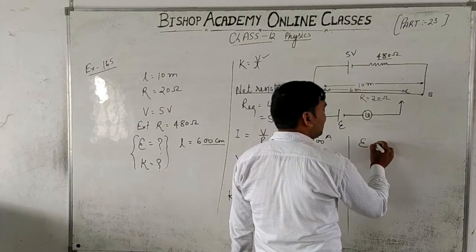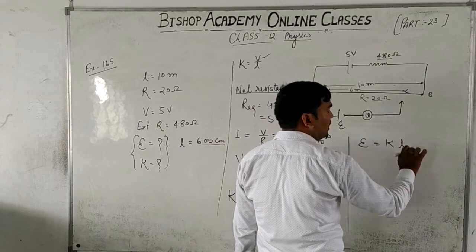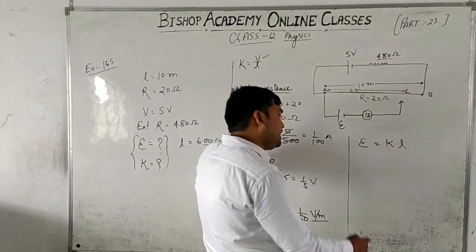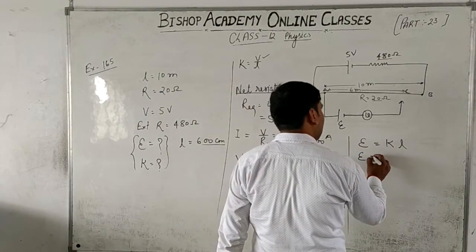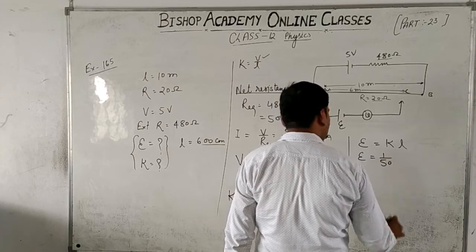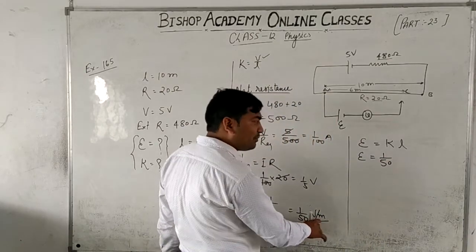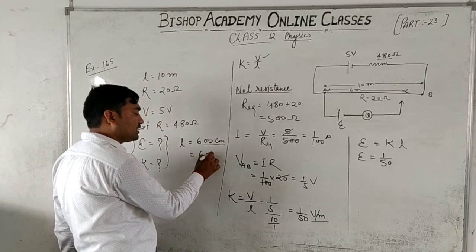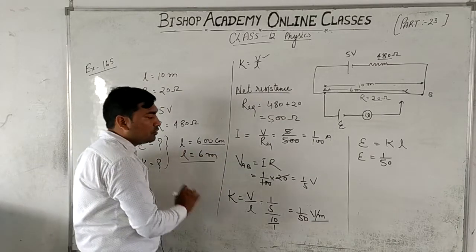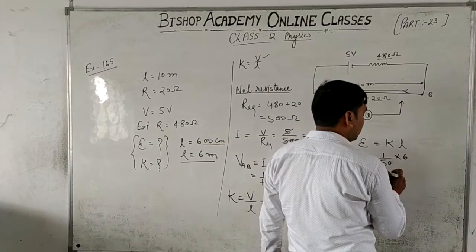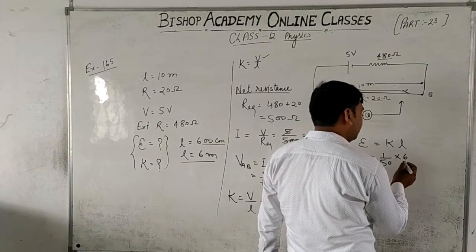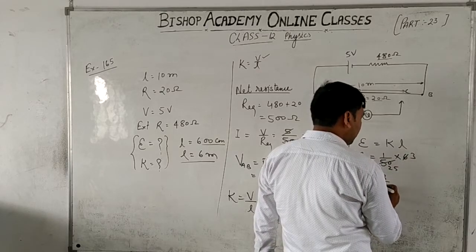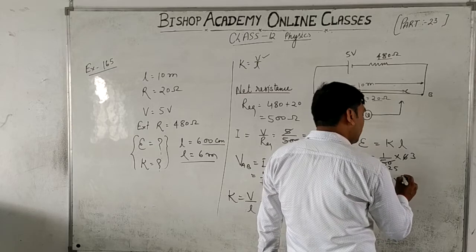Now, what is the unknown EMF? As you know from potentiometer theory, E = K × L. We need to find E. K = 1/50 volt per meter — note the unit is volt per meter, so L must also be in meters. The balancing length is 600 centimeters, which equals 6 meters. So E = (1/50) × 6 = 6/50 = 3/25 volt.